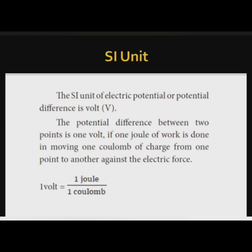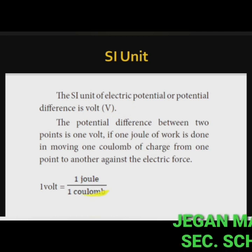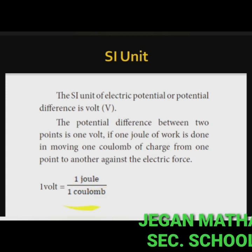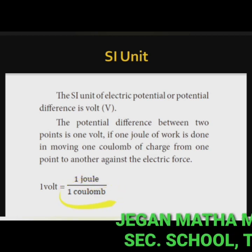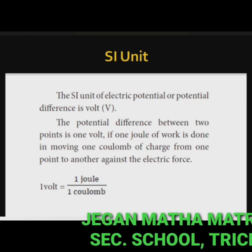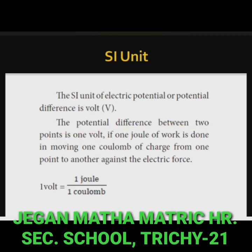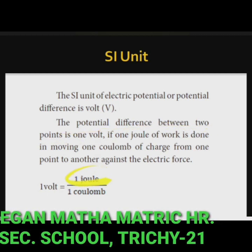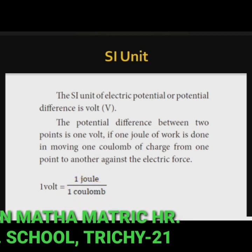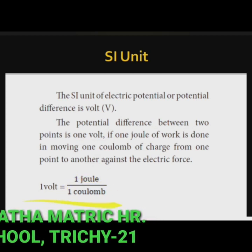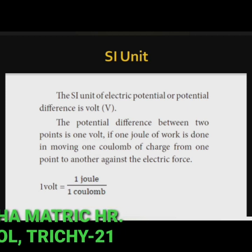The SI unit of electric potential or potential difference is the volt. The potential difference between two points is 1 volt if 1 joule of work is done in moving 1 coulomb of charge from one point to another against the electric force. So, 1 volt = 1 joule / 1 coulomb.